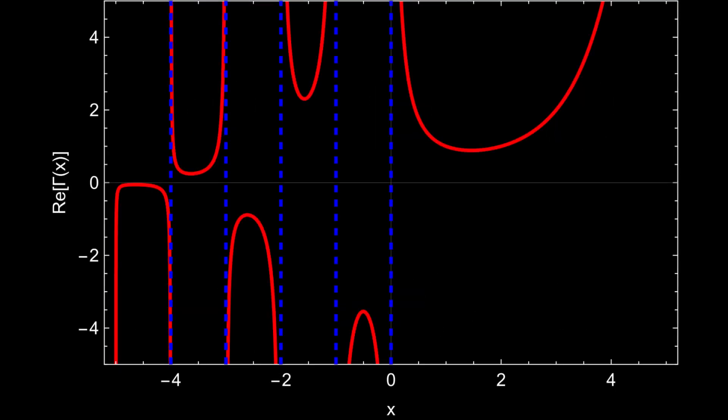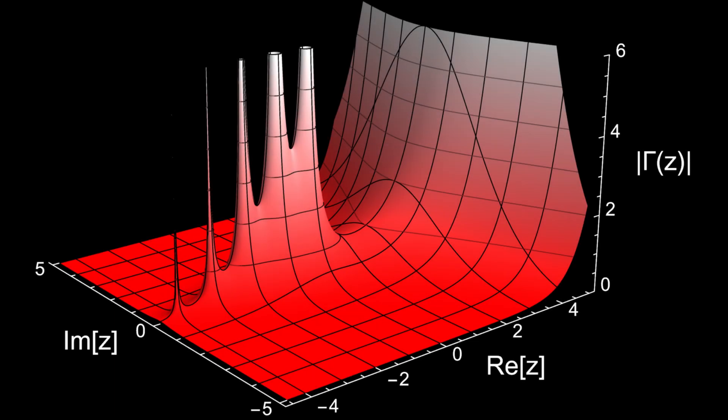You can see the behavior of the gamma function more clearly in the 2D plot of the real part of gamma. The red curve shows how the function behaves along the real axis. It spikes to infinity at 0, negative 1, negative 2, and so on. To the right of 0, the gamma function grows rapidly, even faster than exponential growth. But it's not just defined for real values. It's actually defined over the entire complex plane except at certain singularities.